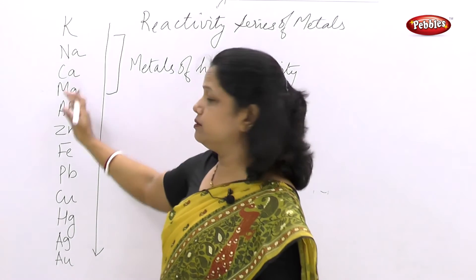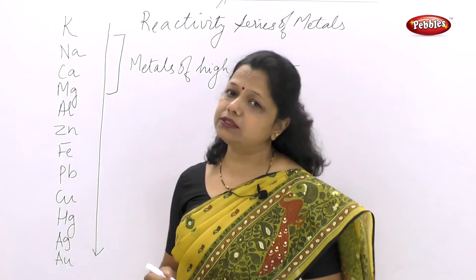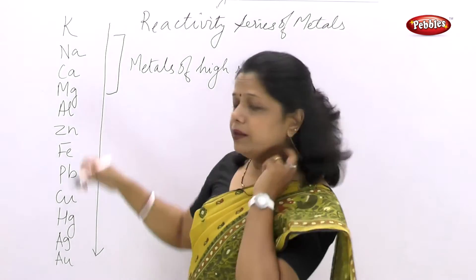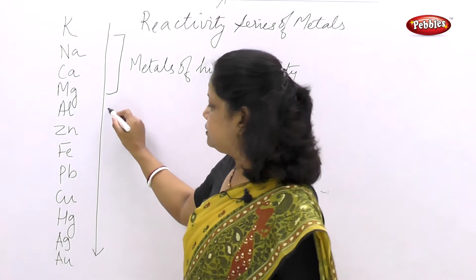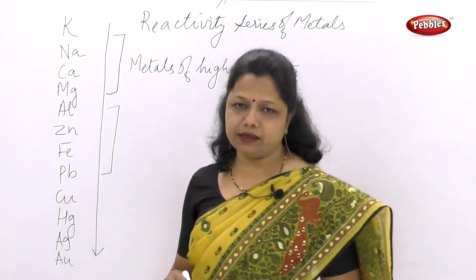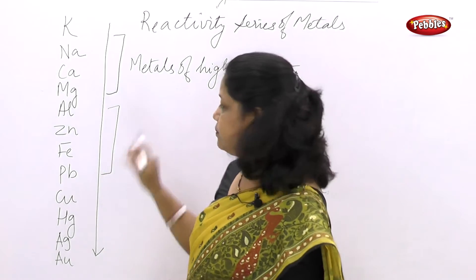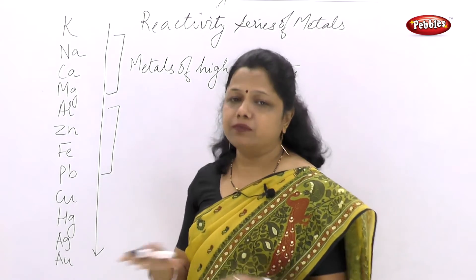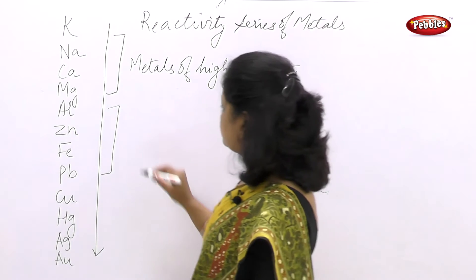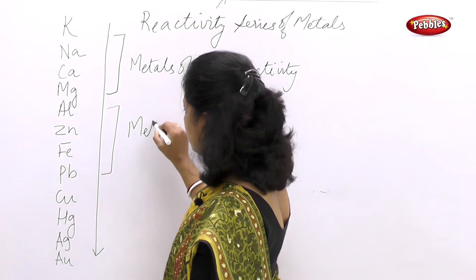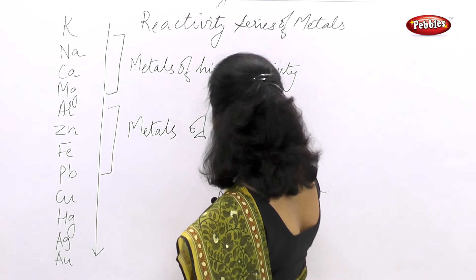These metals are placed in the category of high reactivity because they are highly reactive. The other elements — aluminium, zinc, iron, lead — are put in the medium category. These elements are in the medium range.